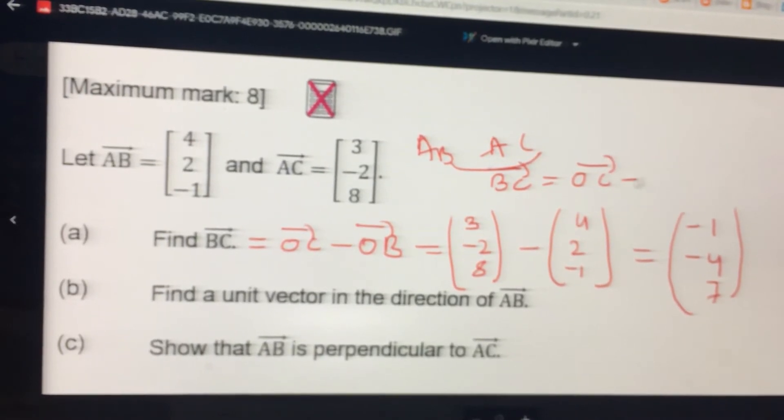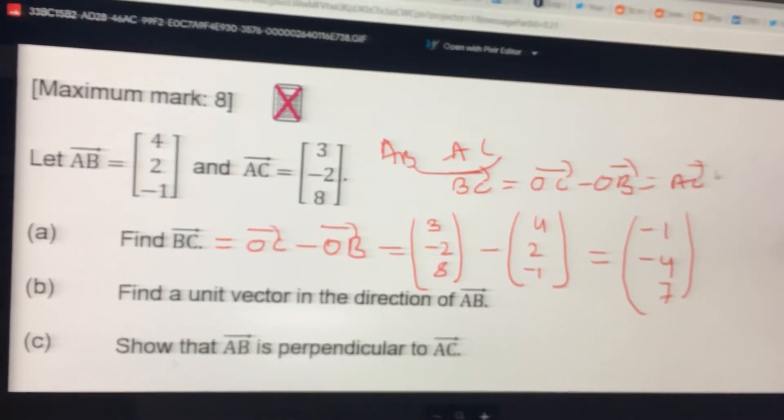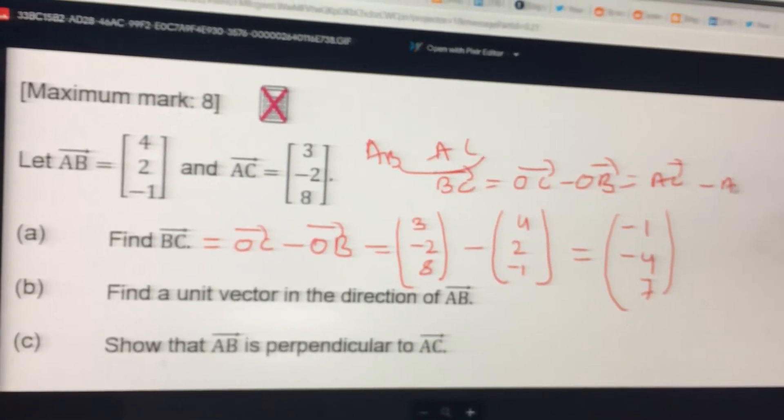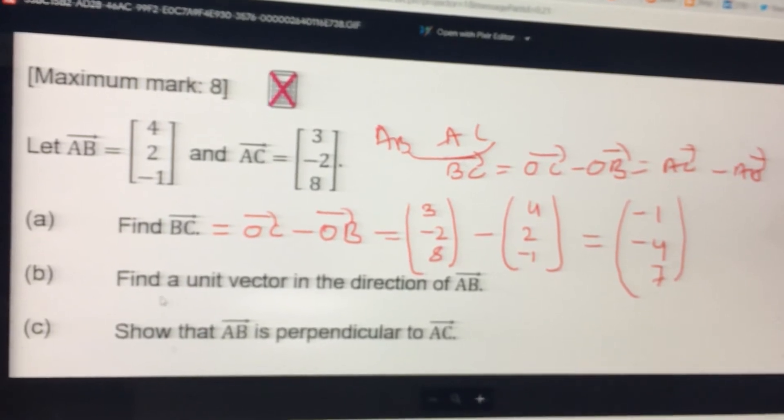Next, find the unit vector in the direction of AB.